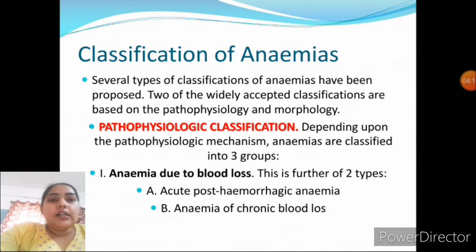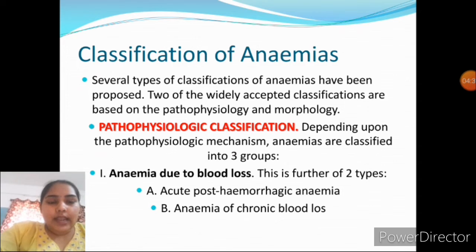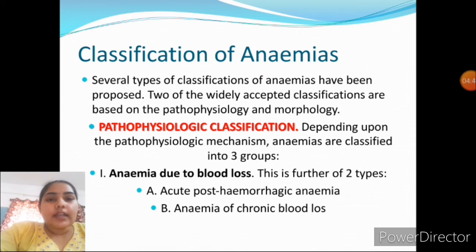Classification of anemia: several types of classification have been proposed. The widely accepted classifications are based on pathophysiological and morphological criteria. The pathophysiological classification divides anemia depending upon the mechanism into: first, anemia due to blood loss; second, anemia due to decreased or inadequate red cell production; and third, anemia due to destruction of red blood cells.